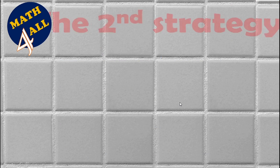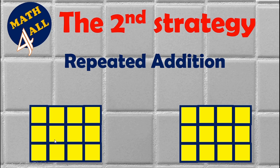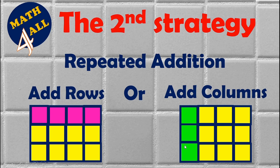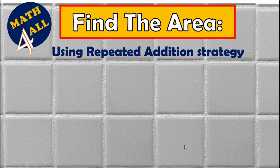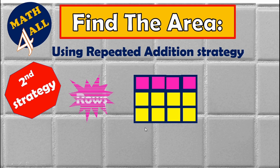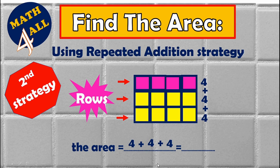The second strategy is repeated addition. For a rectangle, you can use repeated addition by adding rows or adding columns. Here we use adding rows. We have three rows and each row contains four squares, so you add four plus four plus four. Four plus four equals eight, plus four equals twelve.